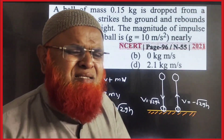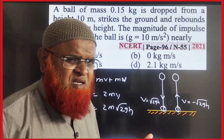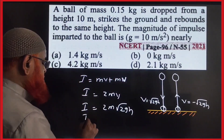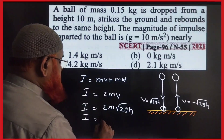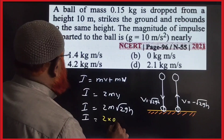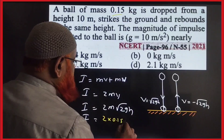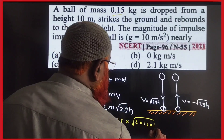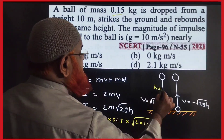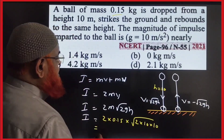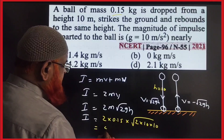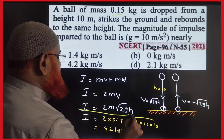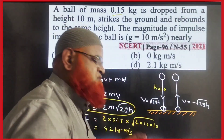This is the easiest way of solving the problem without vector headache. So this is going to be 2 into 0.15 into root of 2 into 10 into 10, because g is 10 and height is also 10. If you solve all this, you will get 4.2 kg metres per second. This is the simplest shortcut method whenever there is a rebound case.